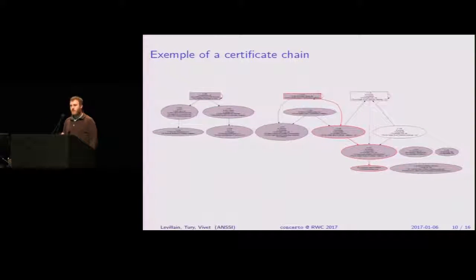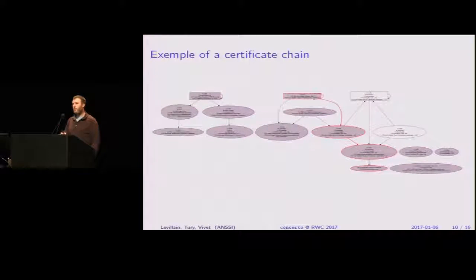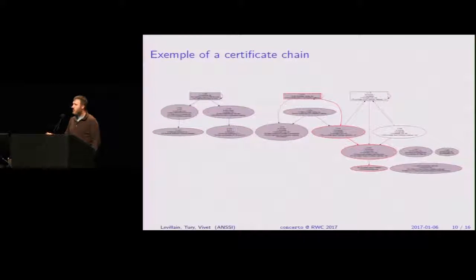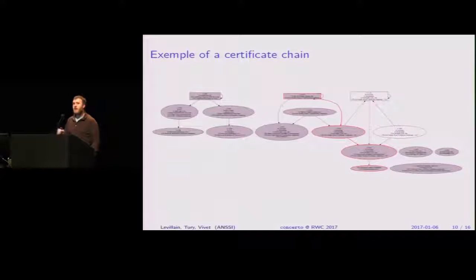Here is an example of a non-trivial certificate message that Concerto can help with. Gray boxes represent certificates sent by the server — the server sent all of these, and in particular this one is the server certificate. We also consider three certificates as trust roots. What Concerto gives you is the ability to build many possible certificate chains — this one is a good chain and essentially the best you can get. But interestingly, in this case you have many certificates that have nothing to do with the server certificate, so you can find very diverse content in the certificate messages sent.